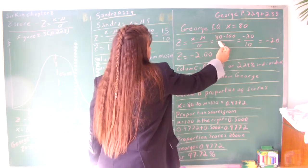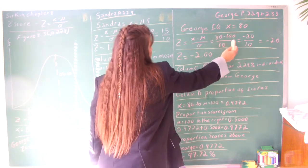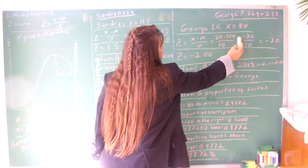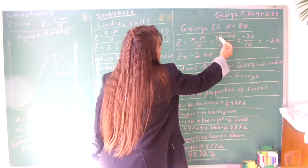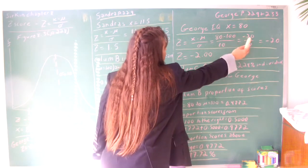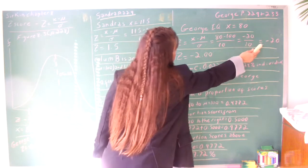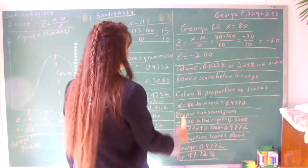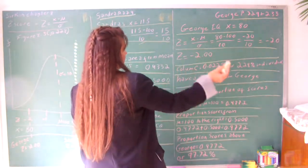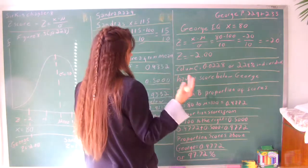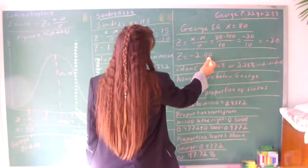80 minus 100 divided by 10. First we subtract 80 from 100 is negative 20 divided by 10 equals negative 2.0. Let's bring it out to the hundredths place here, which is 2 decimal points, tens, hundreds.